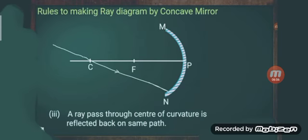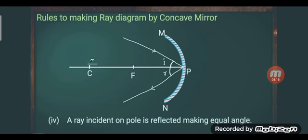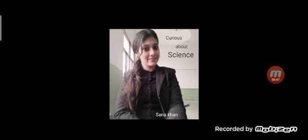So the third rule says a ray from the center of curvature goes back on the same path, and the fourth rule says that any ray incident on the pole, after reflection, has the angle of incidence equal to the angle of reflection. I hope all 4 rules are now well understood. In the next video we will discuss the ray diagrams further. Thank you so much for watching this video.